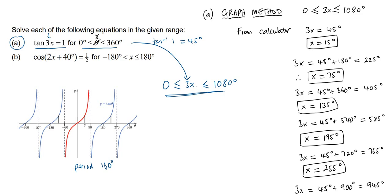When you've got a multiple angle like this, they give you the range for x and not for 3x, so you've got to change that range. We found the first value — remember, this is called the principal value. It's the value your calculator would give you, and it falls within the range. So 3x can equal 45 degrees, and then we divide by 3 which gives us x equals 15 degrees.